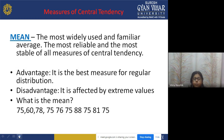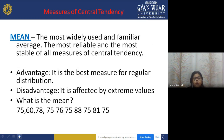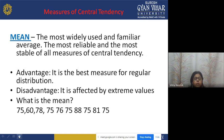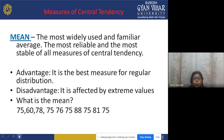To calculate the mean from the series 75, 60, 78, 75, 76, 75, 88, 75, 81, and 75 — there are 10 items (N=10). The mean formula is: mean = summation of fm divided by summation of f. The score at position N/2 — position 5 — will be identified as the mean or average.